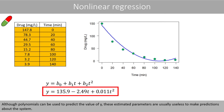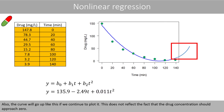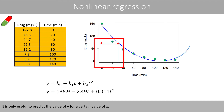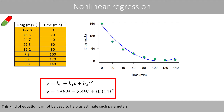Although polynomials can be used to predict the value of y, the estimated parameters are usually useless for making predictions about the system. For example, what does this value tell us about the drug? Also, the curve will go up if we continue to plot it, which does not reflect the fact that the drug concentration should approach zero. This kind of model does not explain anything about the system — it is only useful to predict the value of y for a certain value of x. The aim of these studies is usually to estimate the elimination rate and the volume of distribution, which this kind of equation cannot help us do.